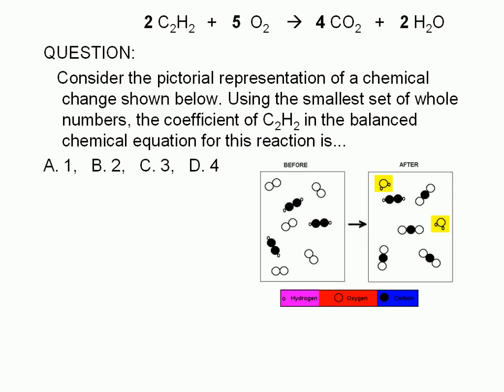So, one possible balanced equation for this reaction is 2C2H2 plus 5O2 yields 4CO2 plus 2H2O. The coefficients are 2, 5, 4, and 2.